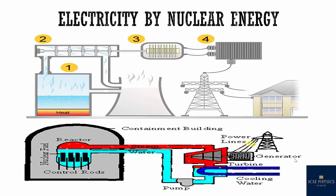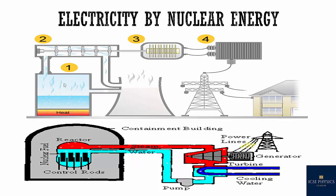All power stations make electricity. Fossil fuel power stations and nuclear power stations all use the same process to make electricity from heat energy. The main four processes that all power stations use are: number one, fuel produces heat which is used to boil water to make steam; second, steam spins a turbine; third, the turbine drives a generator and the generator makes electricity; and fourth, electricity goes to the transformer to produce the correct voltage.